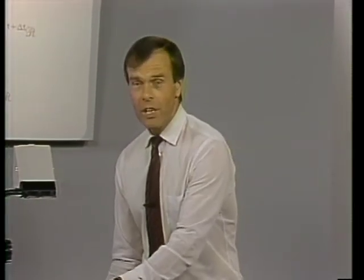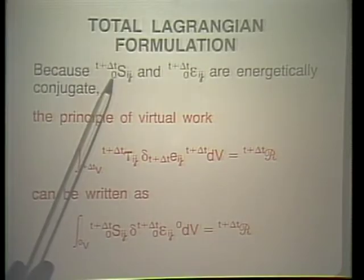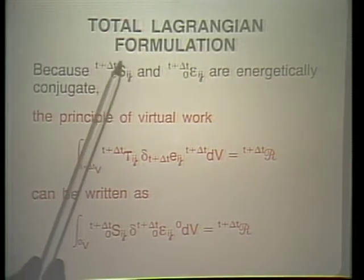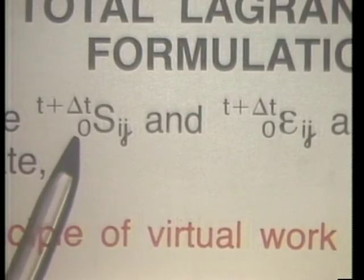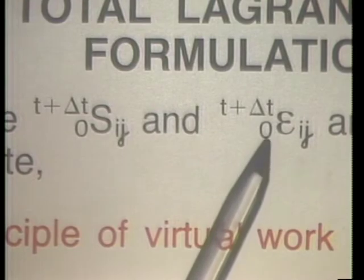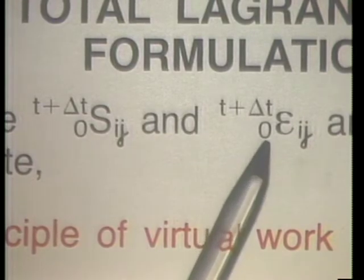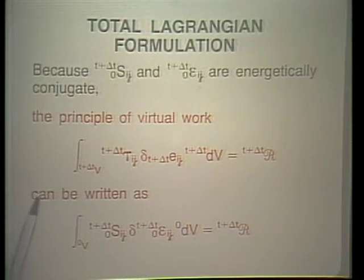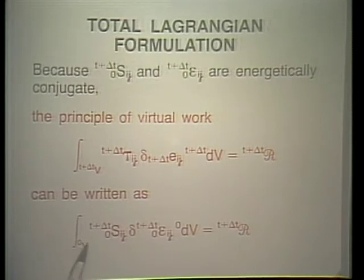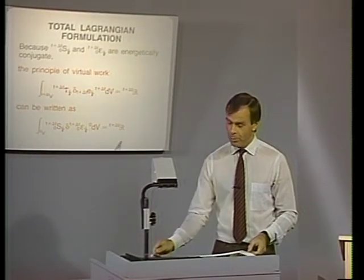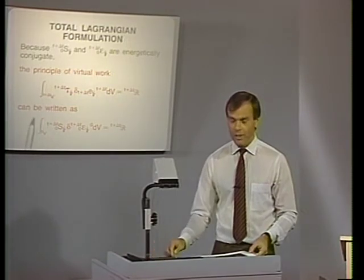In the total Lagrangian formulation, we use the reference configuration at time 0 and work with the second Piola-Kirchhoff stress referred to the configuration at time 0, and the Green-Lagrange strain also referred to the configuration at time 0. The principle of virtual work, originally in the Cauchy form, is now rewritten in this form. This is the starting point of the total Lagrangian formulation.